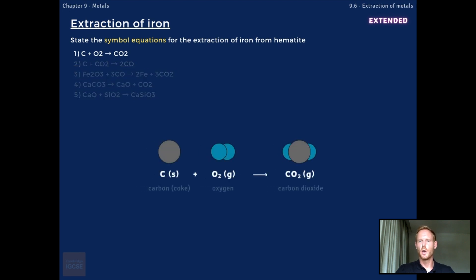So, the first stage is the burning of coke to provide heat and produce carbon dioxide. The symbol equation for this reaction is C plus O2 forms CO2. Next, the carbon dioxide is reduced to form carbon monoxide. C plus CO2 forms 2CO.